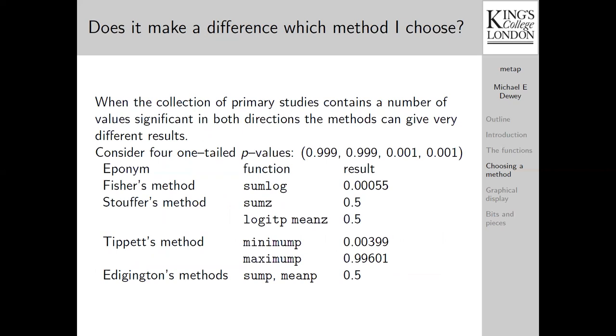Does it make a difference which method you choose? Well, yes, of course it does. Otherwise, one would wonder why we have so many different methods. One feature of the methods is that they don't all behave in the same way. If you have a number of values significant in both directions, as a very artificial example, we take these four one-tailed p-values. Two of the methods, Fisher's and Tippett's method, say reject the null hypothesis because of the two very small ones. But most of the others suggest that this is neutral as to whether you should reject or not and return an overall p-value of 0.5. The maximum p method, which isn't very widely used, gives the inverse to the minimum p method, as you might expect.